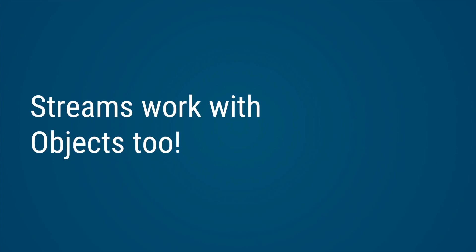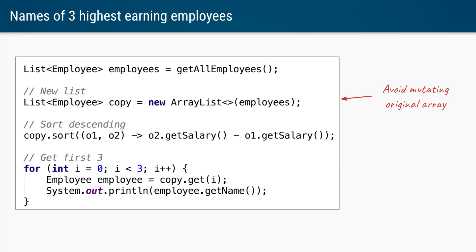Until now we saw IntStreams, but the beauty of streams is that they work with objects too. Let's say we have a list of employees and want to find the names of the three highest-earning employees. Like before, we don't want to sort the original list, so we create a copy, call sort with a comparator function — comparing o2's salary with o1's salary in reverse — and once sorted we get the first three employees and print their names.